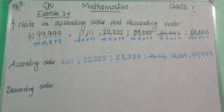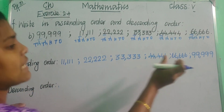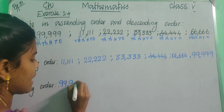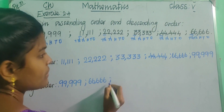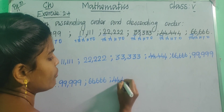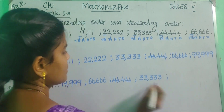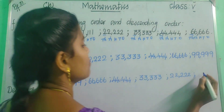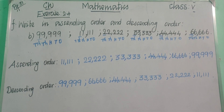We arranged this in ascending order. The descending order is simply the reverse: 99,999, then 66,666, then 44,444, then 33,333, then 22,222, and at the last 11,111 — the smallest number. Copy this in your classbook notebook.